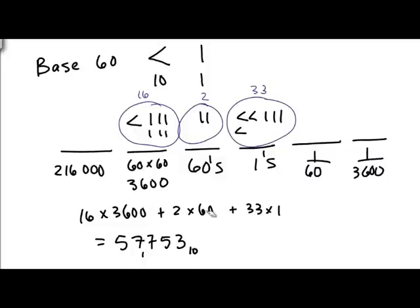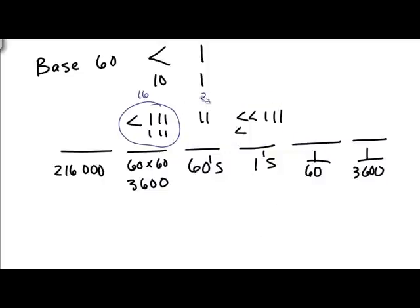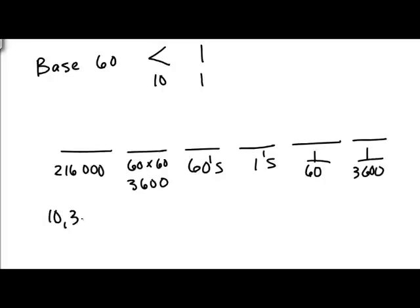And let's do one example going the other way. How do you turn a number from base 10 into a Babylonian number? Let's say we want 10,391. We're not going to need fractions for that. So the question is, let's see, 216,000s. Do we have any 216,000s? No, that's much bigger. We don't have, you could put a zero there, but we don't generally.